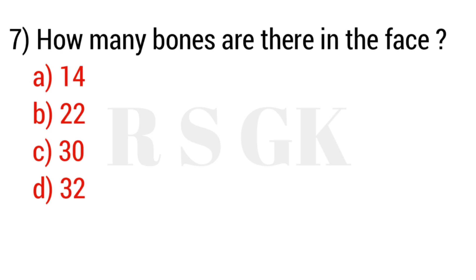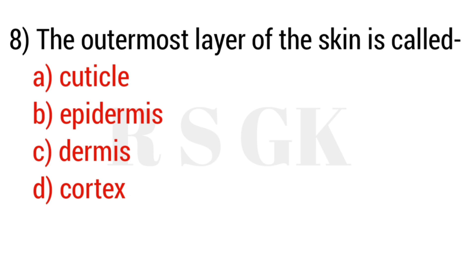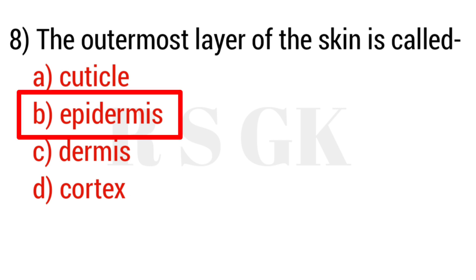Question number seven: How many bonds are there in the molecule? The answer is Option A: 14. Question number eight: The outermost layer of the skin is called — the answer is Option B: epidermis.